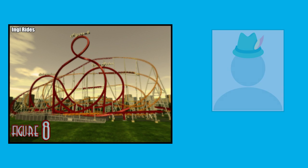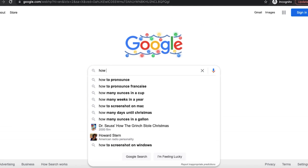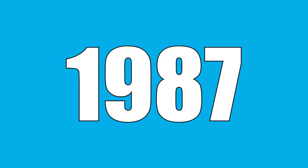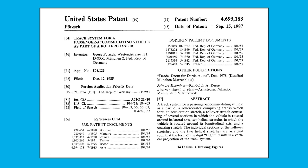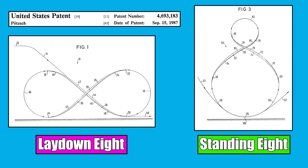The design was dreamt up by a German showman named George Putz. In 1987, Mr. Putz patented his crazy coaster design, which actually details two different figure-eight inversions: a lay-down eight, which is essentially back-to-back Immelmans positioned to look like a sideways number eight, and the standing eight, featured in RCT3.